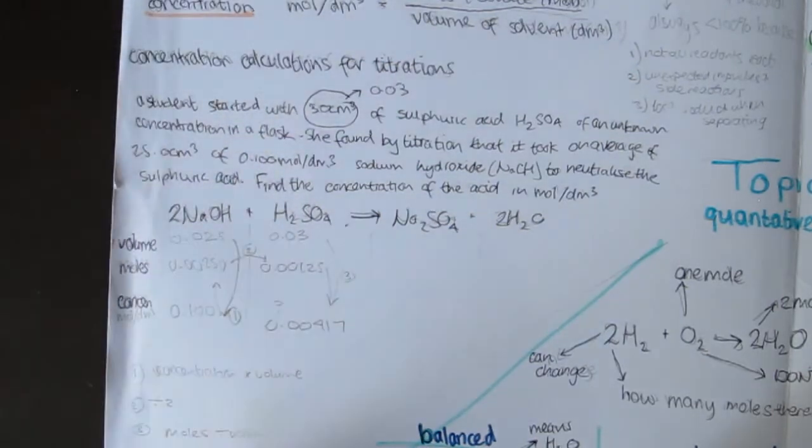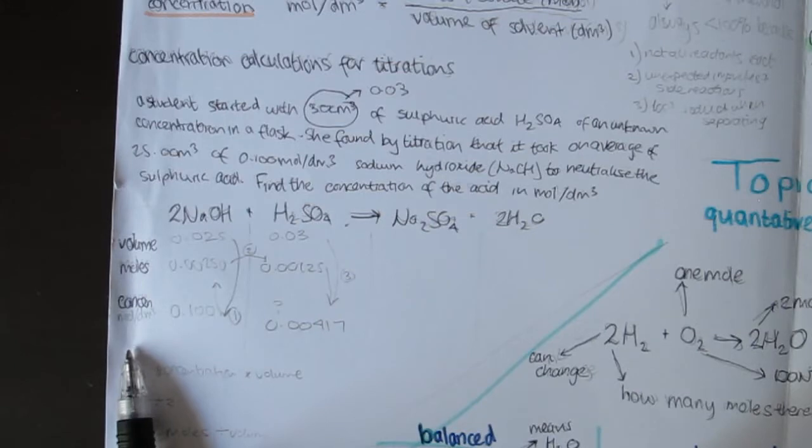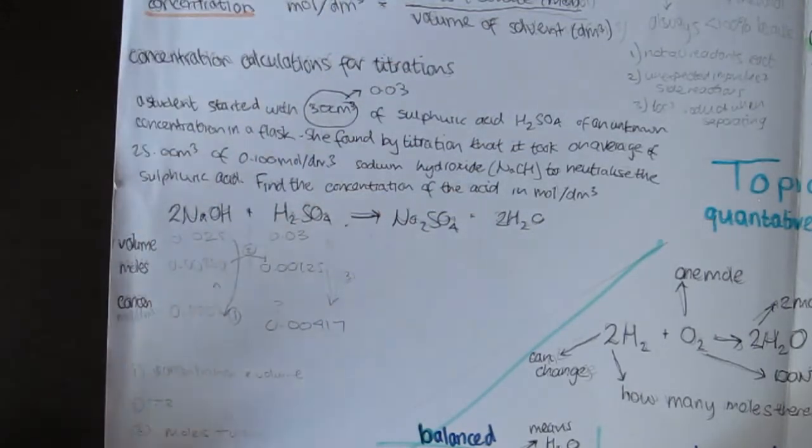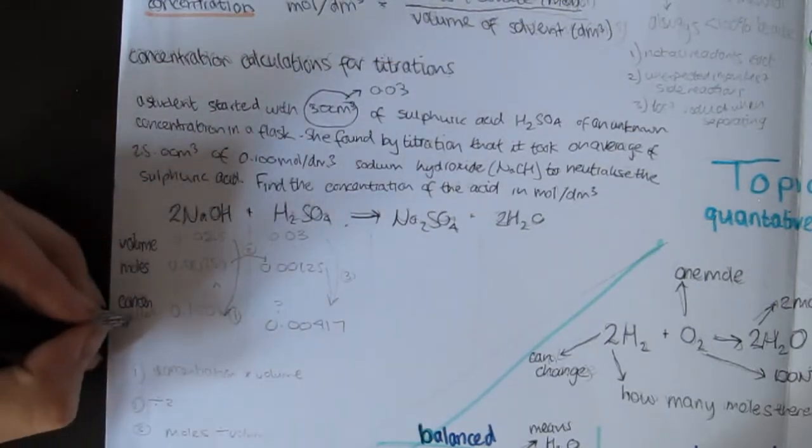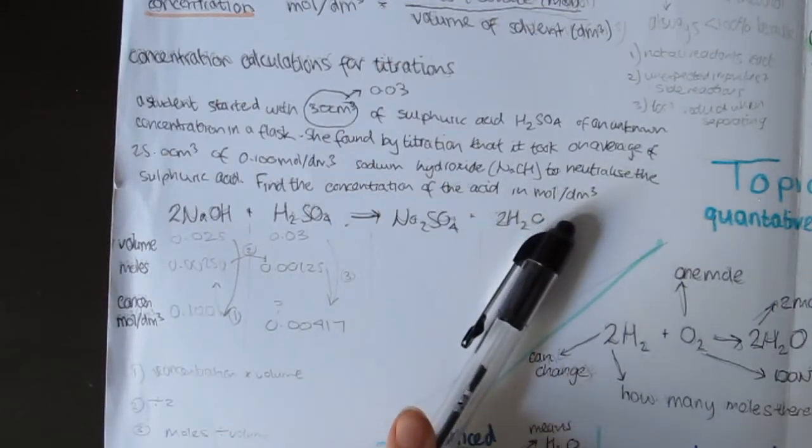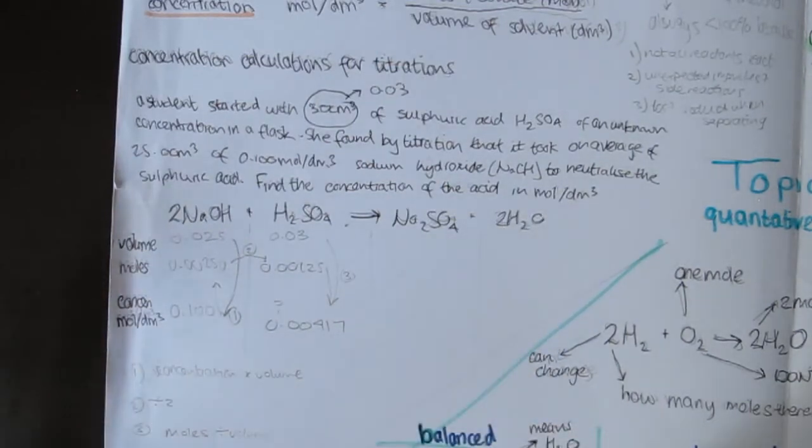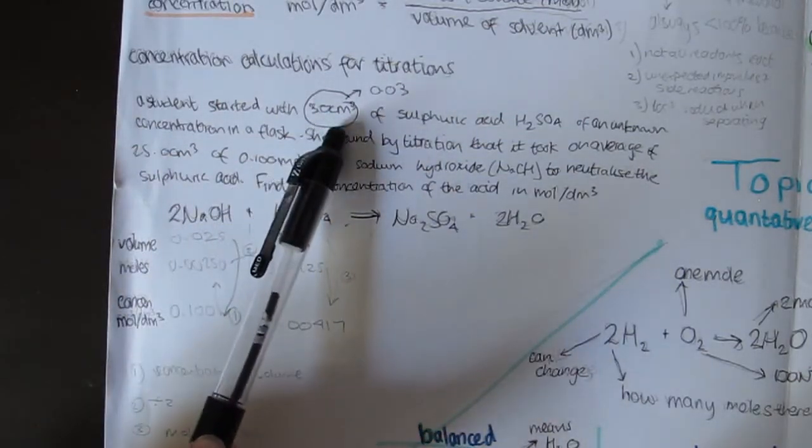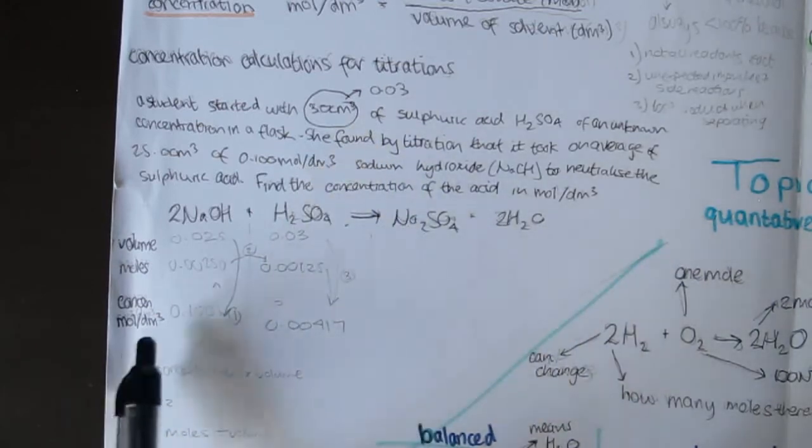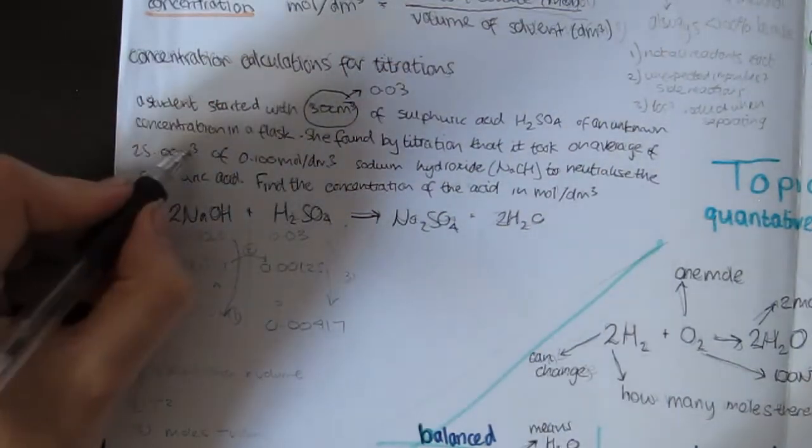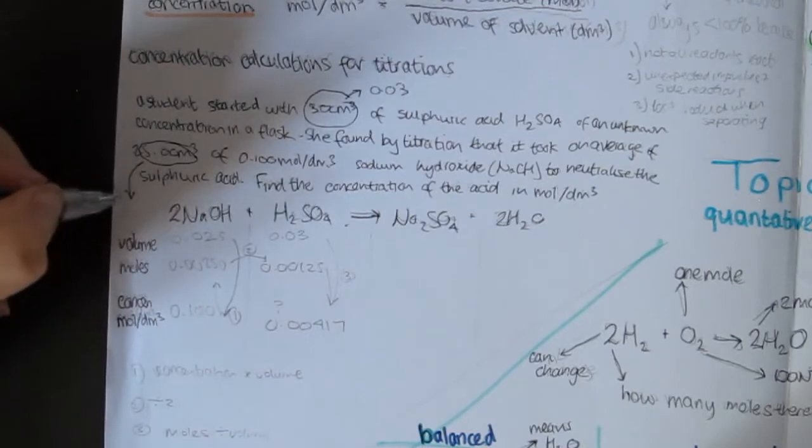Now, concentration can come in two different units, as explained above. So this one is going to be in moles per decimetres cubed, because that is what the question wants. Now, they also like to be tricky with the units, because in the question, they also put them as centimetres cubed, but you actually need them in decimetres cubed. So you'll need to convert all centimetres cubed into decimetres cubed. So I'm just going to do that now.